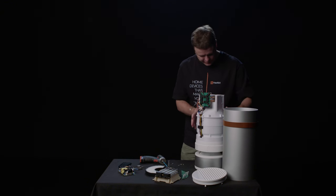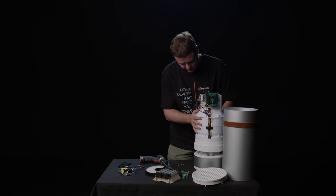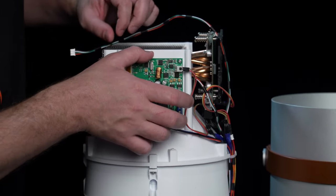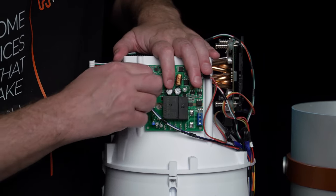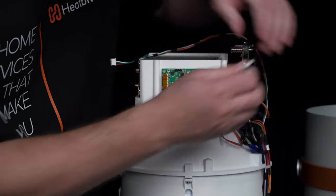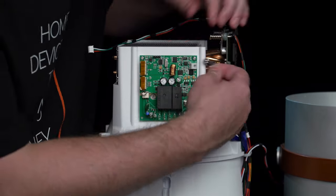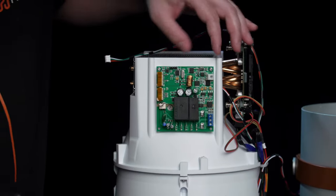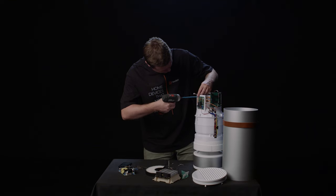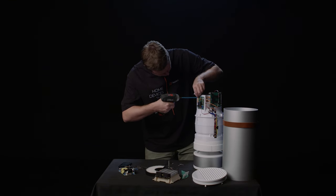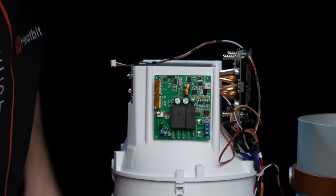Next thing that we've got is fan and heating control board. So that's the board that we've got here. This is the circuit board that controls the fan and also the heating coil.